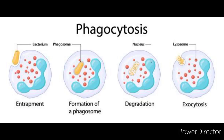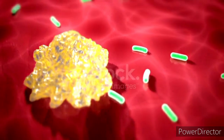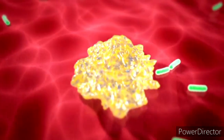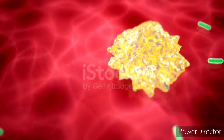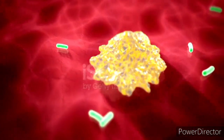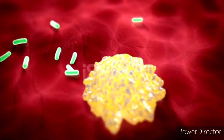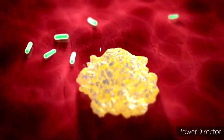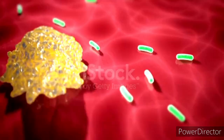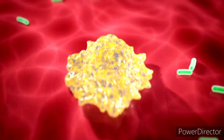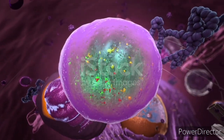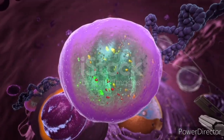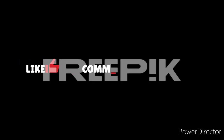Phagocytosis and defense. In immune cells like macrophages, lysosomes merge with phagosomes containing ingested bacteria, viruses, or cellular debris. This fusion forms a phagolysosome, where the contents are broken down and destroyed, playing a role in the body's defense against pathogens. Thanks for watching. Don't forget to like, share, and subscribe.